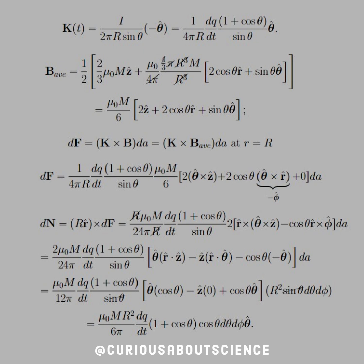We've seen that before. So if we add this all together, simplify down, cancel everything that we can, all that fancy stuff, what we see is that B average equals mu naught M over 6, and we're left with a three-component vector: 2 z hat plus 2 cosine r hat plus sine theta hat.